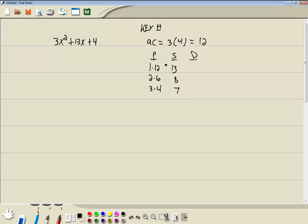In the difference column, we want to subtract smaller from larger. 12 minus 1 is 11, 6 minus 2 is 4, 4 minus 3 is 1.